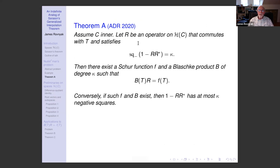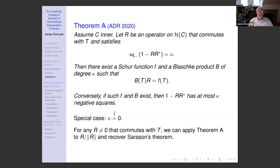This follows from the abstract theorem by choosing V = Cⁿ and A the diagonal matrix with entries z₁ through zₙ, and D = all linear functionals. Now here is Theorem A. Assume C is inner. Let R be an operator on H(C) that commutes with T, and in addition 1 − RR* has κ negative squares. Then there exists a Schur function F and a Blaschke product B of degree κ such that the operator identity B(T)R = F(T) is satisfied. Conversely, if such F and B exist, then 1 − RR* has at most κ negative squares. For κ = 0, applying Theorem A to R over the norm of R recovers Sarason's original theorem.